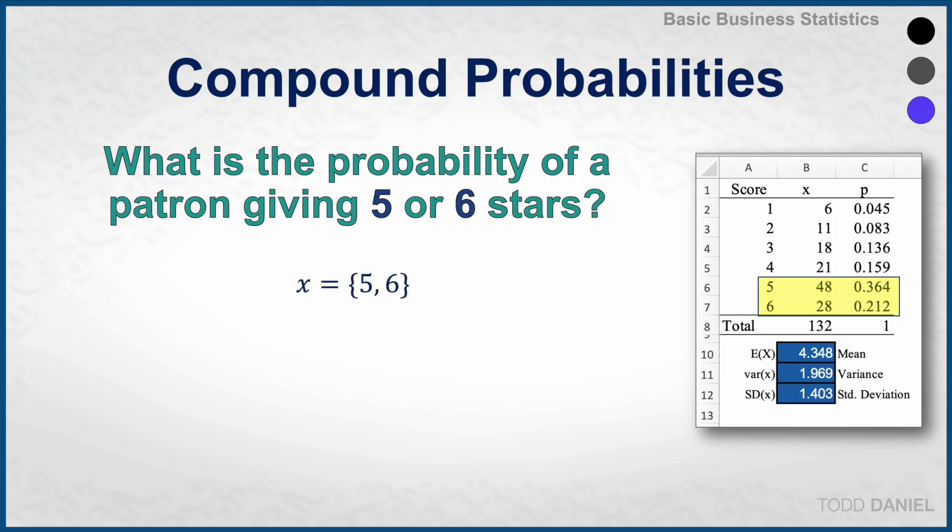The event in our probability distribution can take on the values of five or six. The probability of a patron assigning five stars is 0.364. The probability of a patron assigning six stars is 0.212. We add those values together: 0.567 or 56.7 percent.